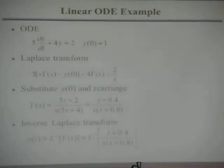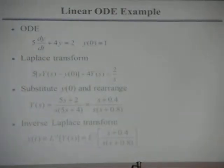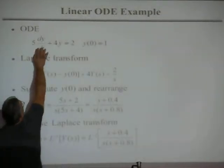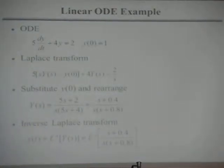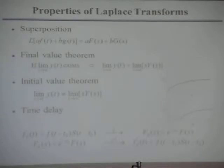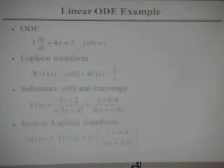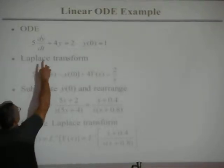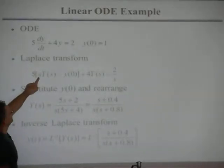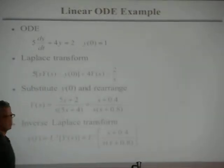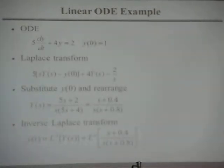First of all, I'm going to apply the Laplace transform to both sides of the equation. This is a linear operator, so I can take the Laplace transform term by term and add up the results. I can pull the 5 out. Apply the Laplace transform term by term, pull the 5 out, and then take the Laplace transform of dy/dt. That gives S times the Laplace transform of Y minus the initial condition of Y — derived using integration by parts.